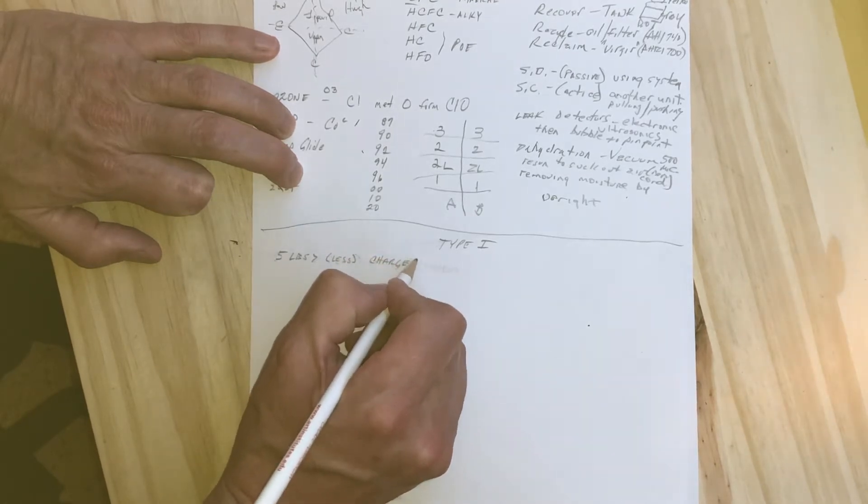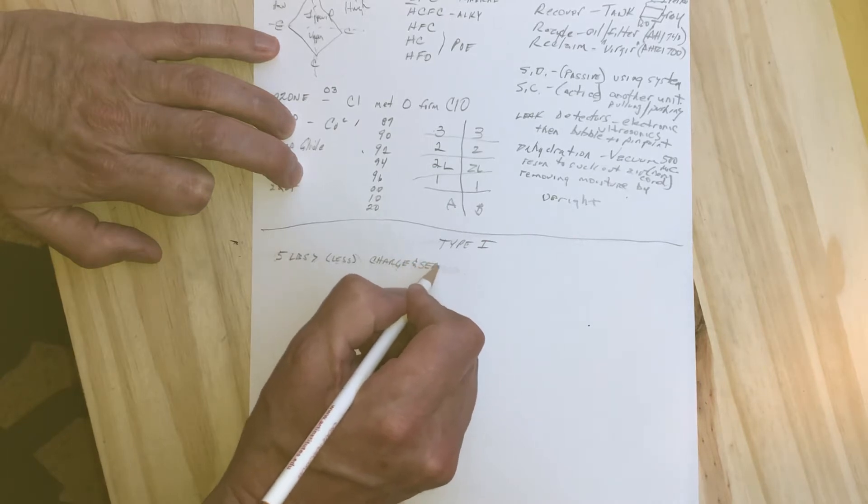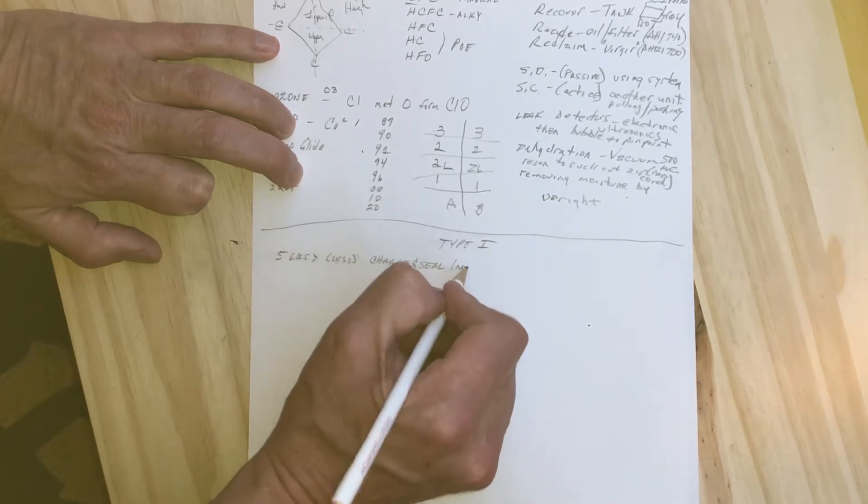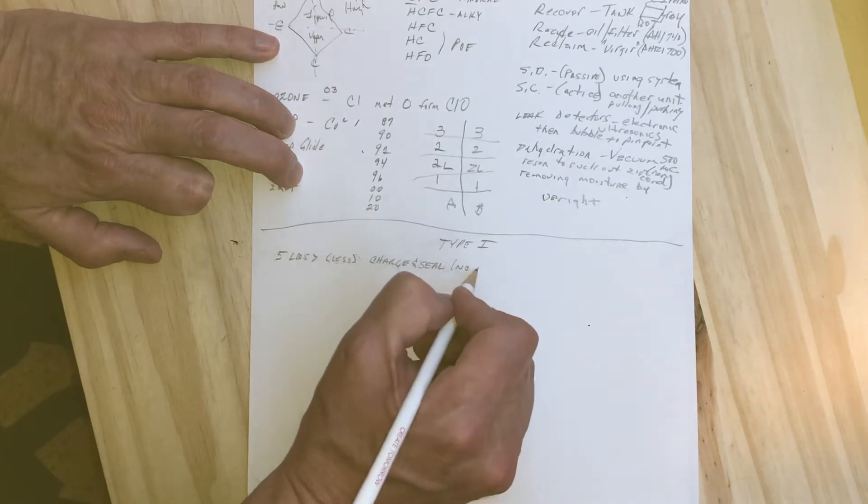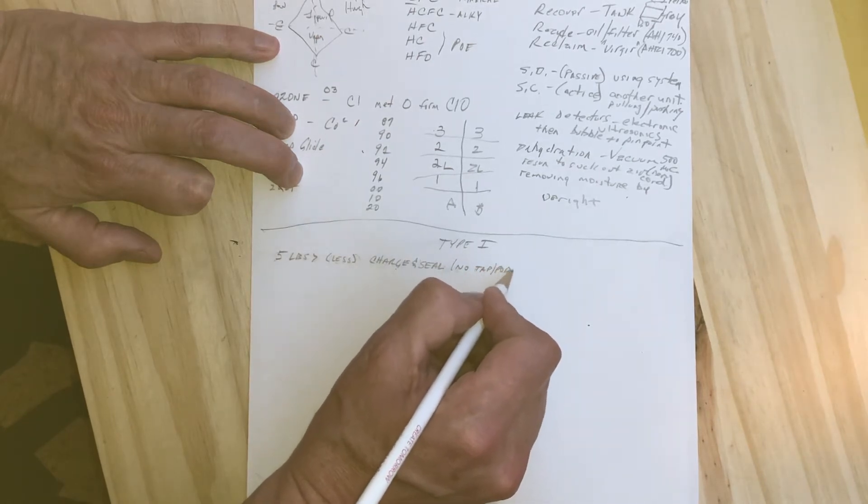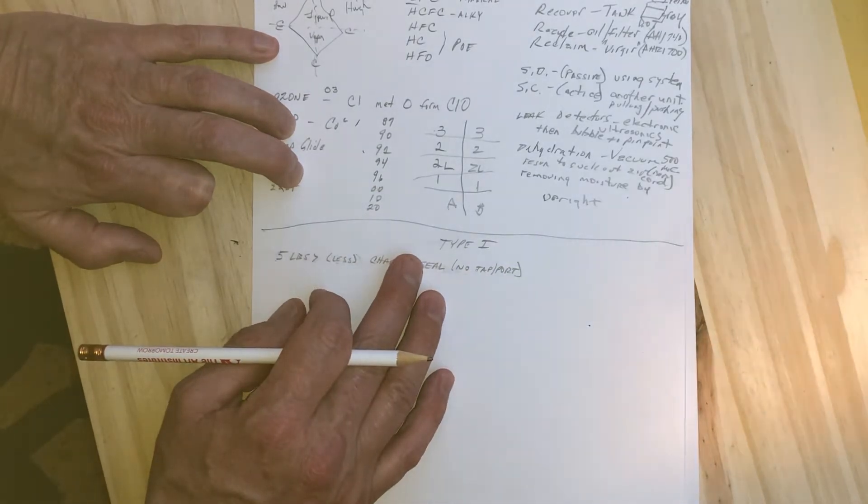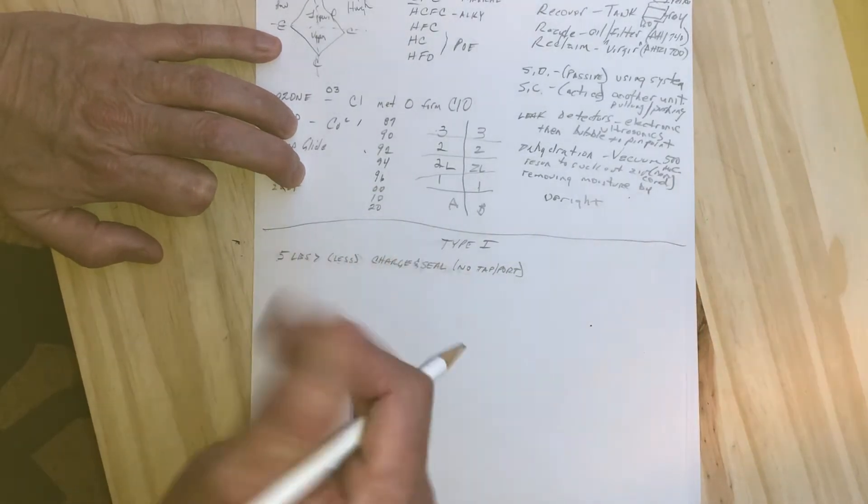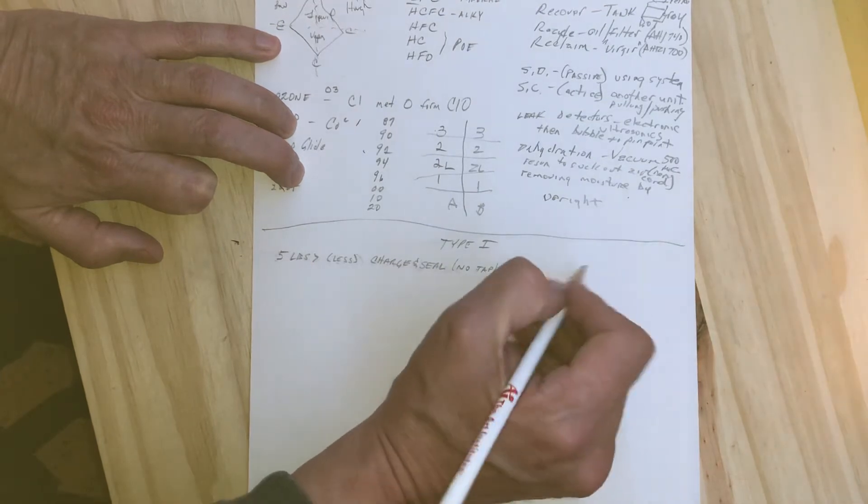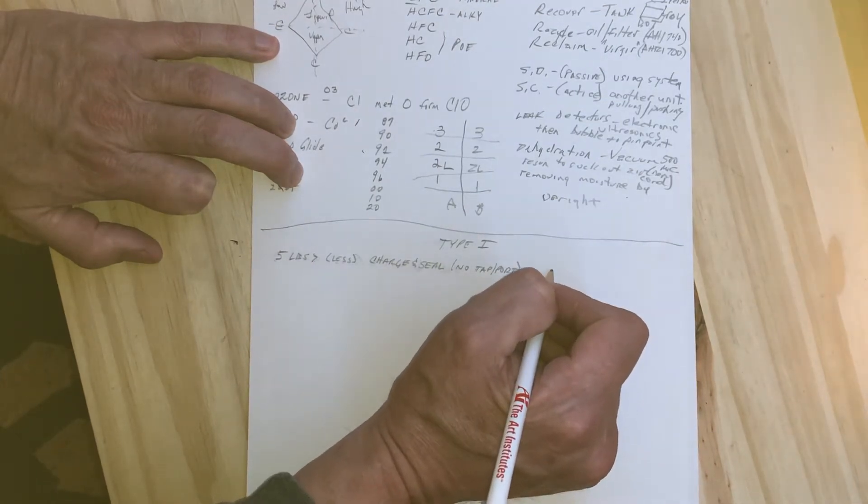It's pre-charged and sealed. The sealing means that there are no taps or ports for us to hook up gauges to, so there's going to need to be some line tap or piercing valve installed that we'll talk about in a minute.